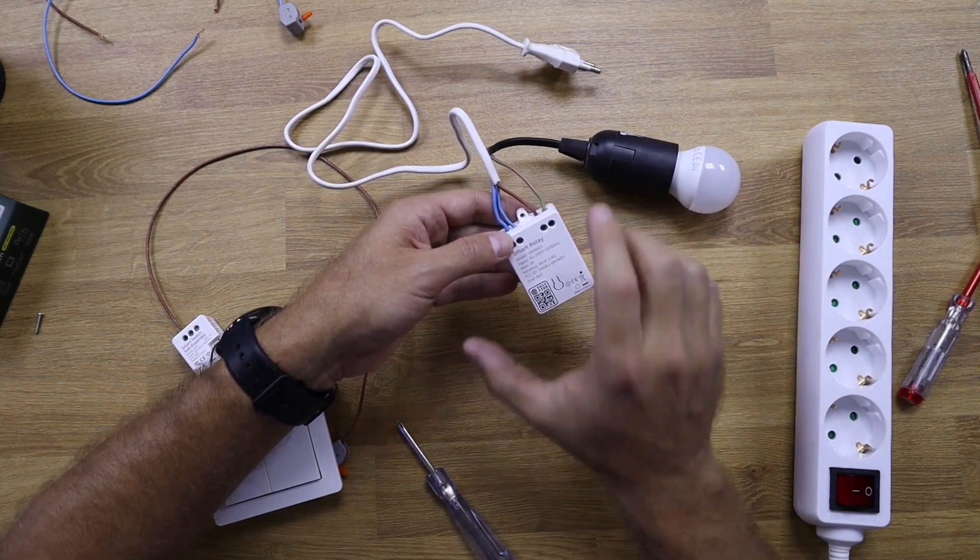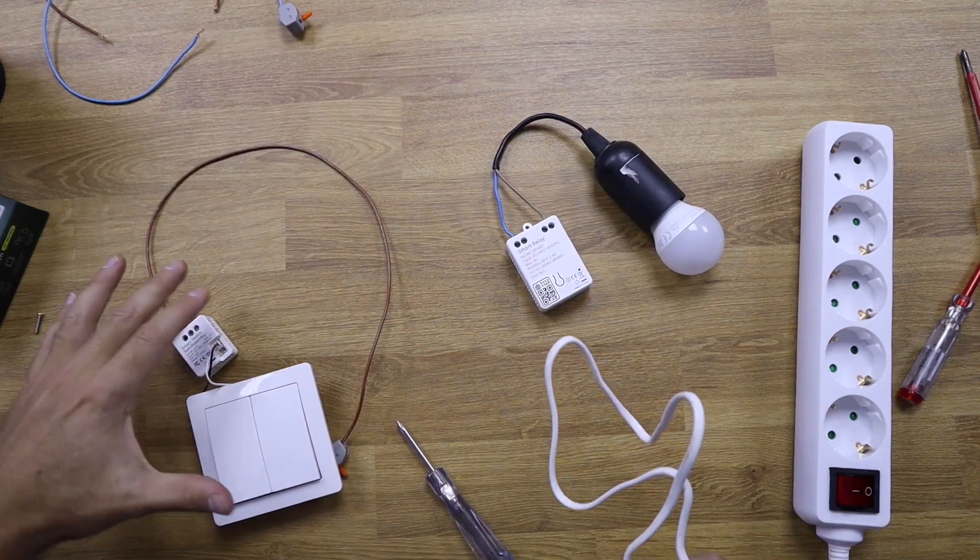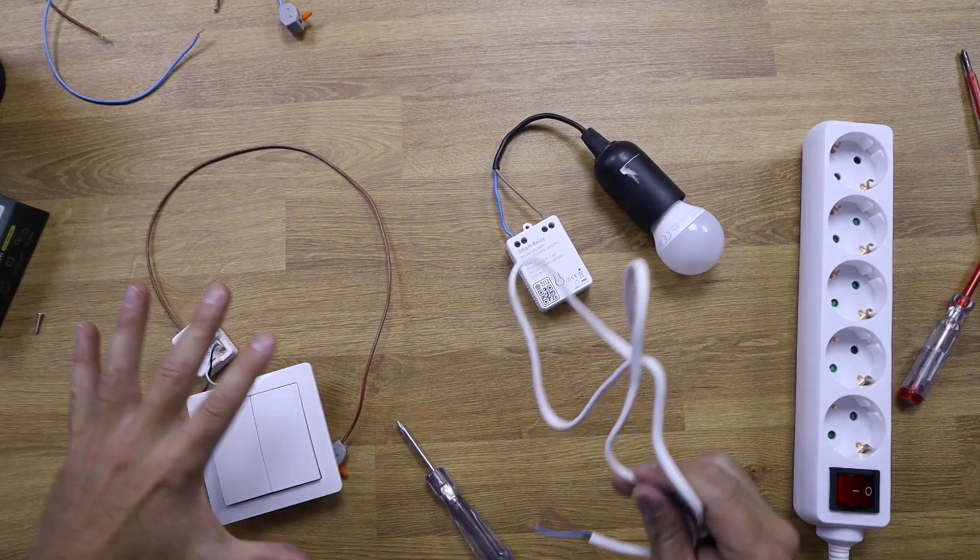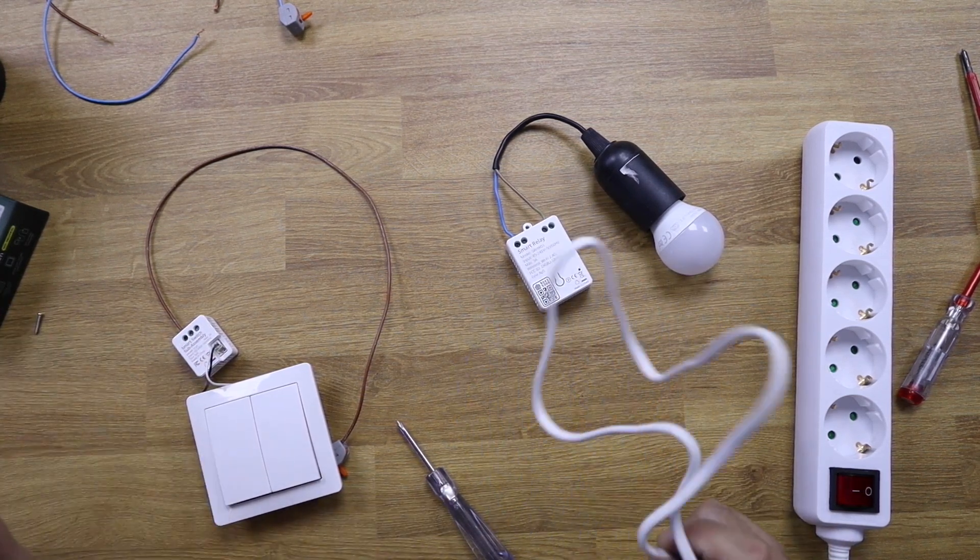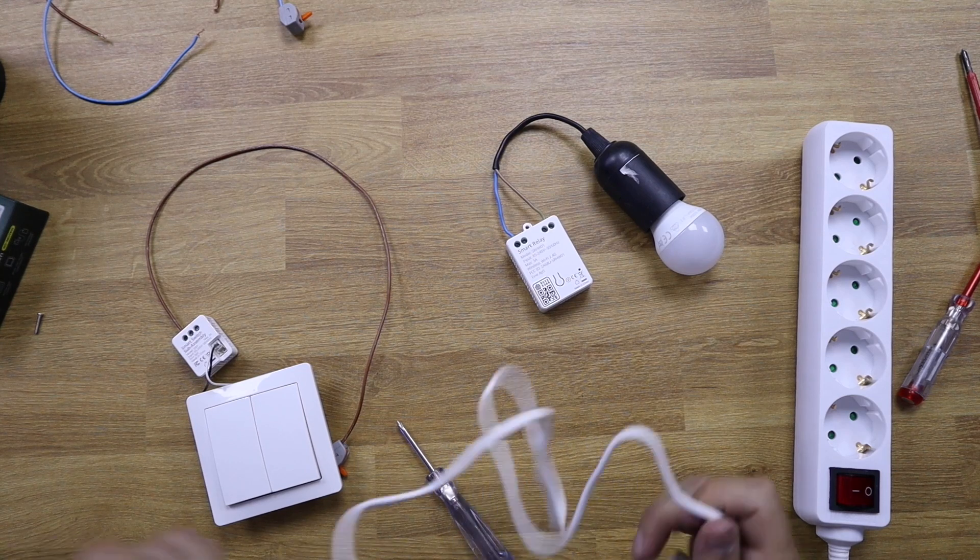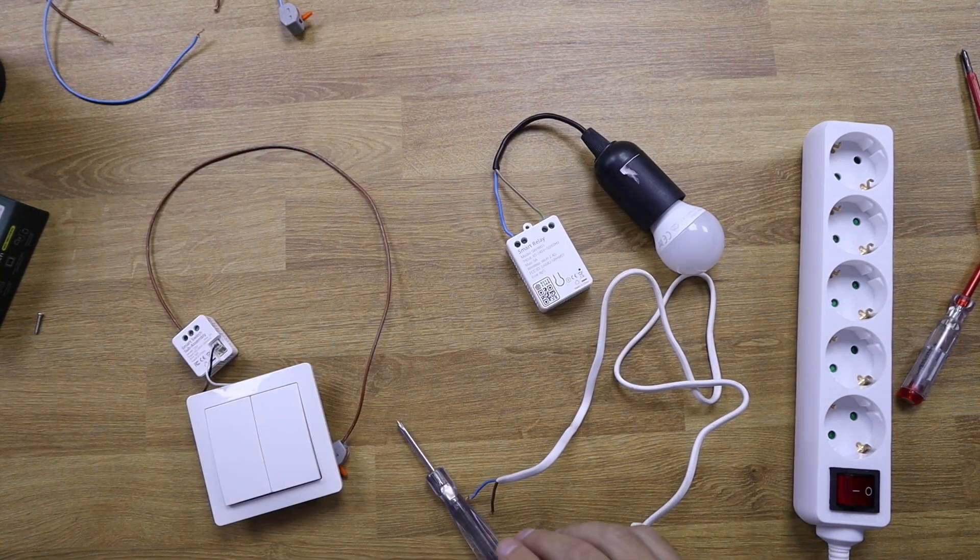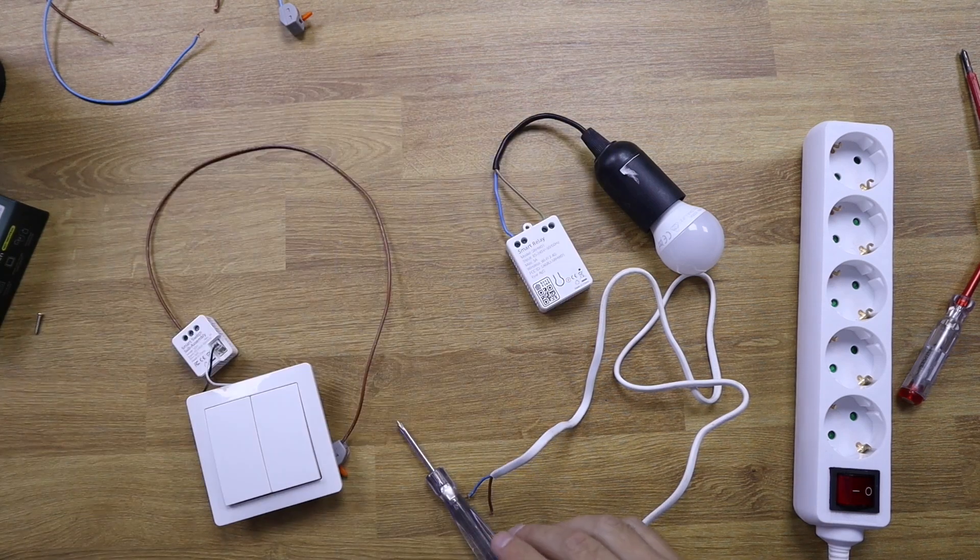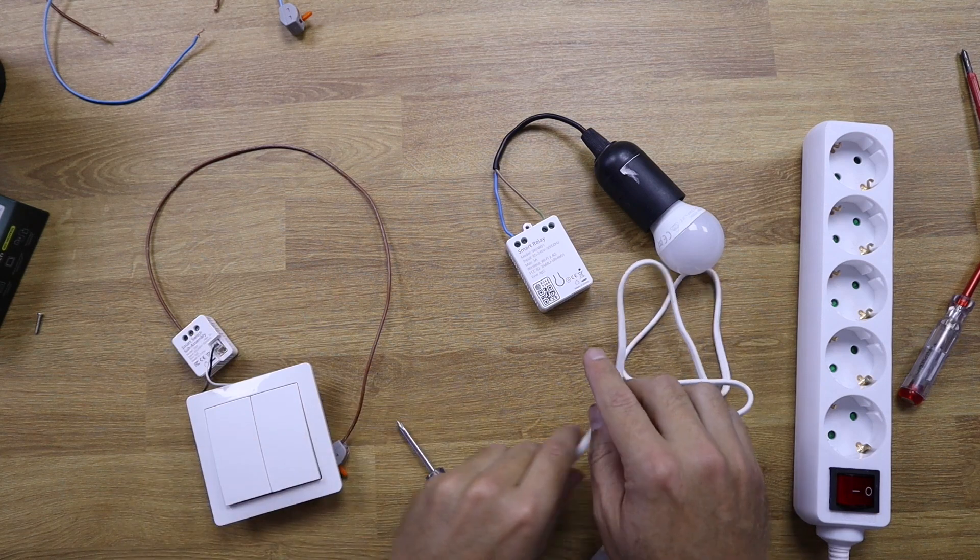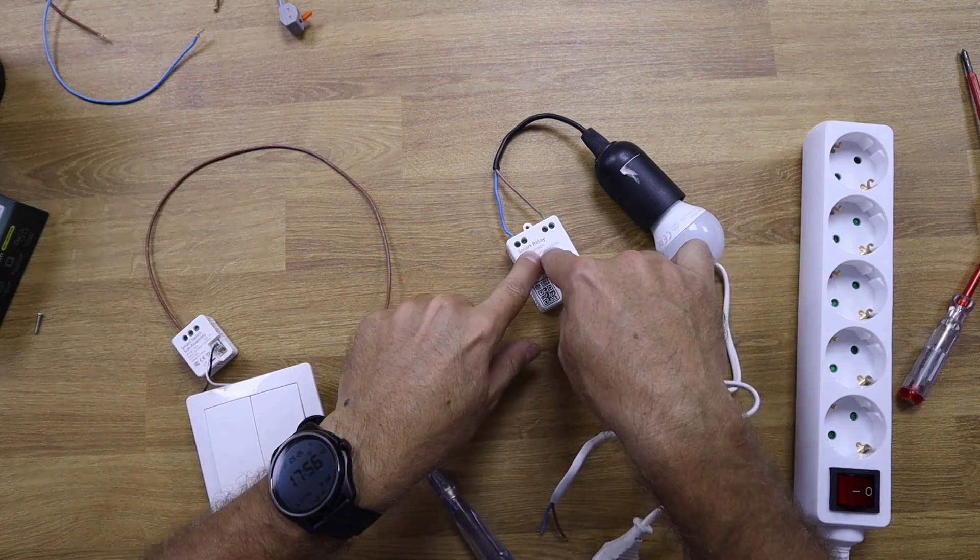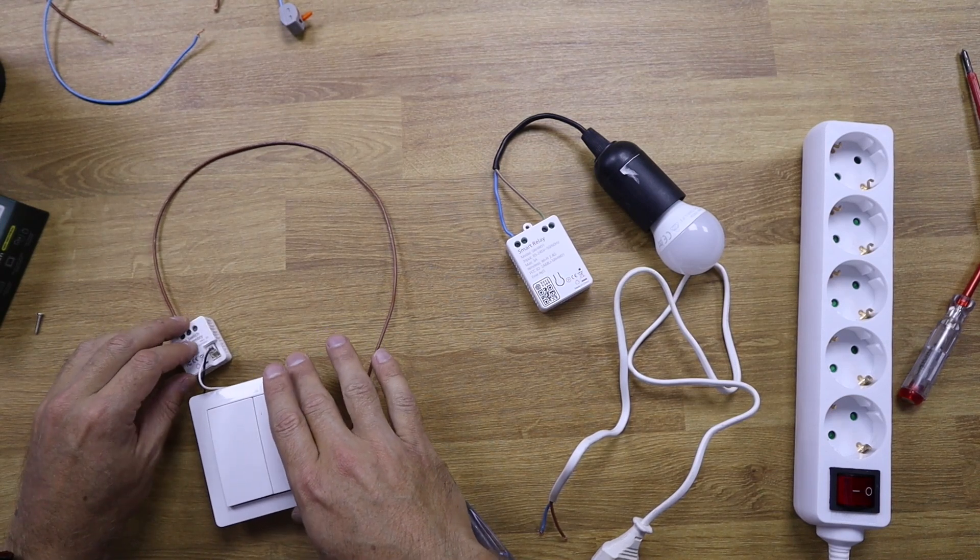But we want to see the example of using this and also using the manual switch, because it will change a little bit here. It's not difficult, but we just need to pay attention to the diagram. Of course, you will have this on the manual right over here. Actually, it comes with two manuals: one in case we want to use the switch and the other one if we don't.